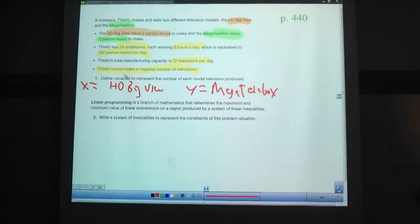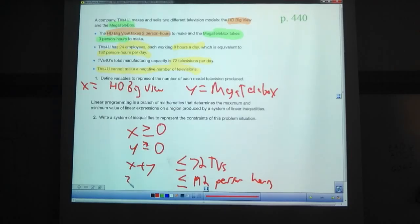So, system of inequalities. There's no negative numbers. That means that X has to be greater than or equal to zero. It could be equal to zero. It could make zero HDBigViews. And Y has to be greater than or equal to zero. We've got a limit on 72 televisions per day. So, whatever amount of TVs we're making has to be less than 72. And we have a limit of 192 person hours per day. See if you can finish up with these inequalities on your own. Okay. Hopefully you came up with X plus Y is less than or equal to 72. And hopefully you came up with 2X plus 3Y is less than or equal to 192.